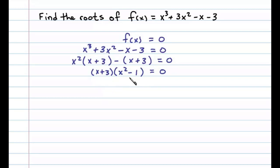Now we're not quite done factoring because the factor x² - 1 is a difference of squares. So we could factor that further and we have (x + 3)(x + 1)(x - 1).